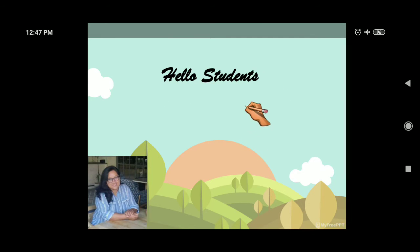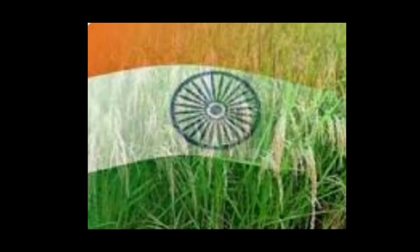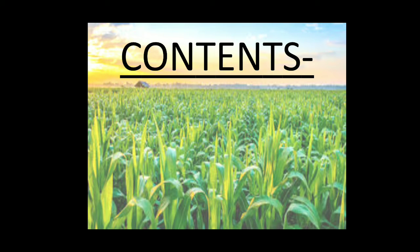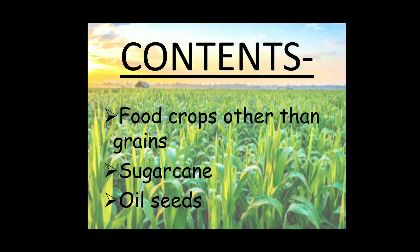Hello students, let's begin our social science class. In continuation of NCRT Geography, Chapter Agriculture, today's contents are food crops other than grains. In the previous video, we discussed two food crops other than grains. Now, in this video, we are going to discuss sugarcane and oilseeds, which are also included in food crops other than grains.